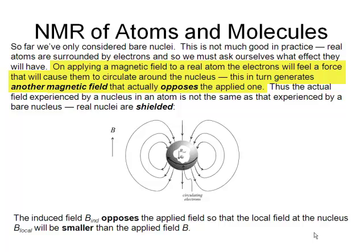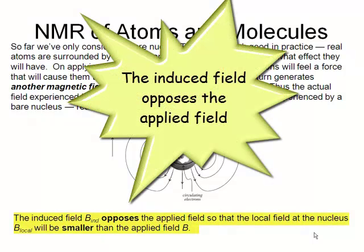Circulating charges generate magnetic fields. So the applied field B creates orbital motion of the electrons, and that generates an induced magnetic field, and that induced magnetic field is in the opposite direction to the applied field.